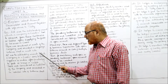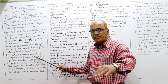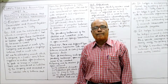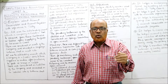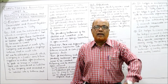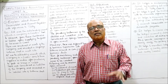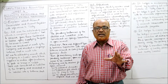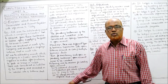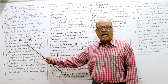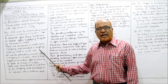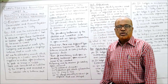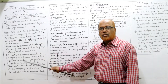Accounts payable is the outstanding amount which a company or trader owes — meaning has to pay — to their suppliers or vendors after purchasing goods or services on credit. Accounts payable is a liability, so it is shown on the liabilities side of the balance sheet.